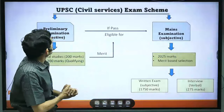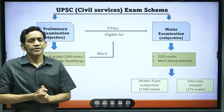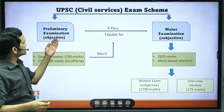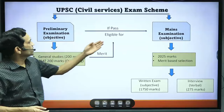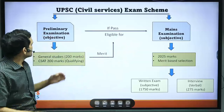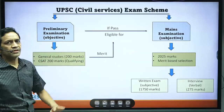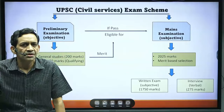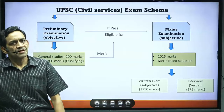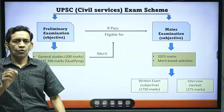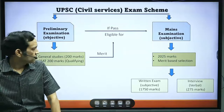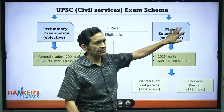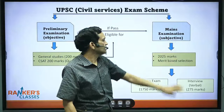The civil services overall scheme can be divided into two parts: the preliminary examination and the mains examination. The preliminary examination is objective type — MCQs — where you have to tick on an OMR sheet. If you pass this, you then appear for the mains examination.